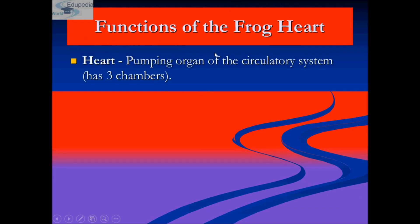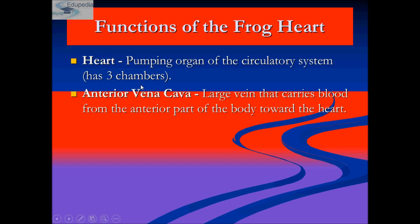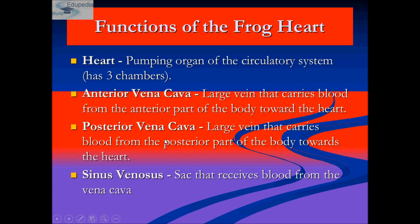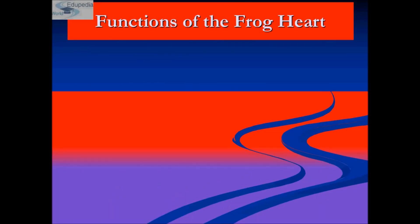The heart of the frog is the pumping organ of the circulatory system with three chambers: two auricles and one ventricle. The vena cava is the largest vein, with two types — anterior and posterior — carrying blood from the anterior and posterior parts of the body respectively toward the heart. The sinus venosus is the sac that receives blood from both the anterior and posterior vena cavas.